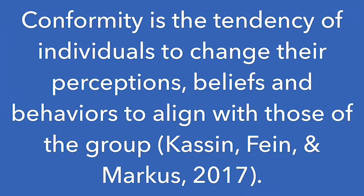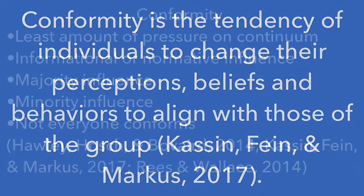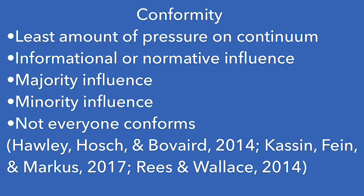According to Casson, Fine, and Marcus, conformity is the tendency of individuals to change their perceptions, beliefs, and behaviors to align with those of the group. As mentioned, the three types of social influence — conformity, compliance, and obedience — occur on a continuum ranging from the least amount of pressure placed on a person to the most direct and demanding. Conformity actually involves the least amount of pressure.